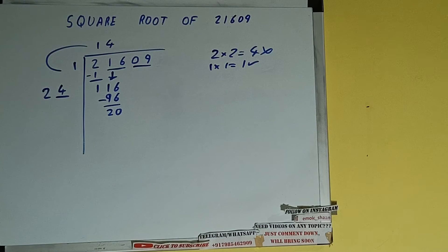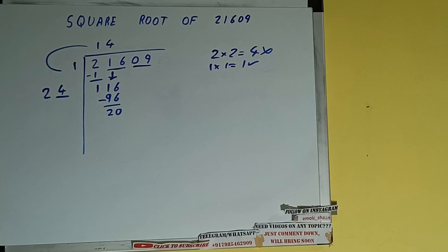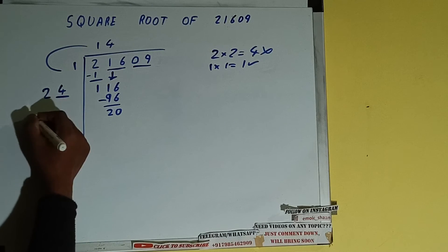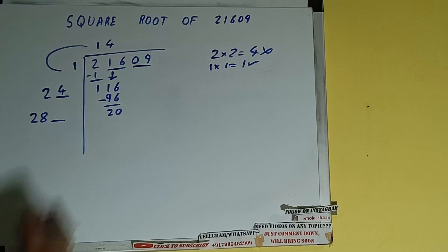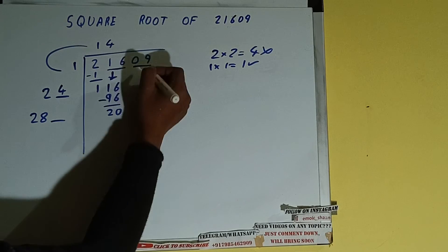Now 24 into 4 we did, so add both. So 24 plus 4 will be 28. Write it here and keep a digit extra, and this number we need to make it big. So bring the next pair down and it will be 2009.